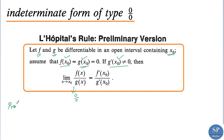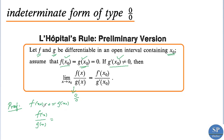Now we can prove this L'Hôpital's rule — that is, we must show that the limit as x tends to x₀ of f(x)/g(x) equals f'(x₀)/g'(x₀). We have f(x)/g(x) equal to: since f(x₀) = 0 and g(x₀) = 0, we can write this as [f(x) − f(x₀)] divided by [g(x) − g(x₀)].